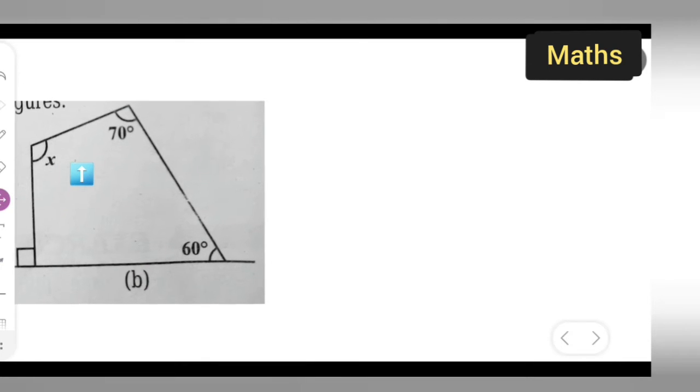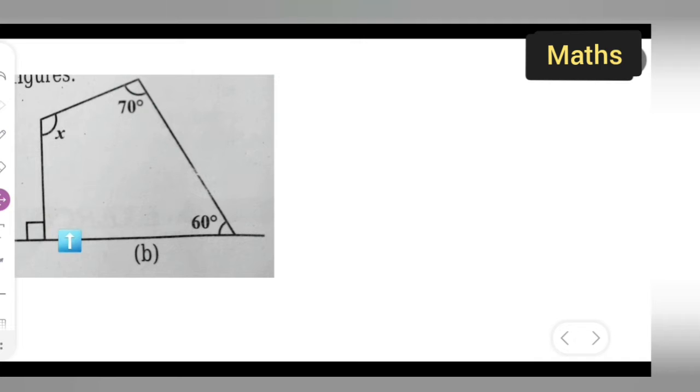Here one value is not given, but we know that this will also be 90 degrees. What we do is linear pair. So if we consider this part as a.